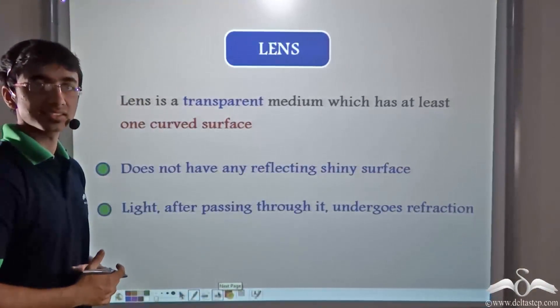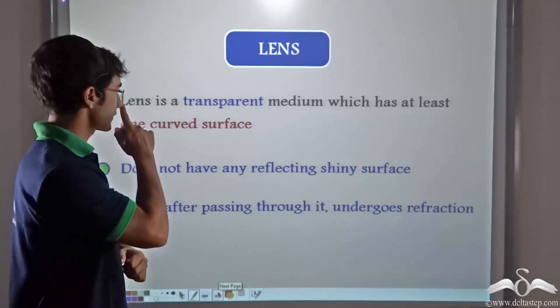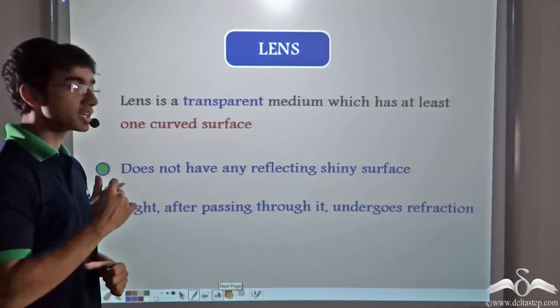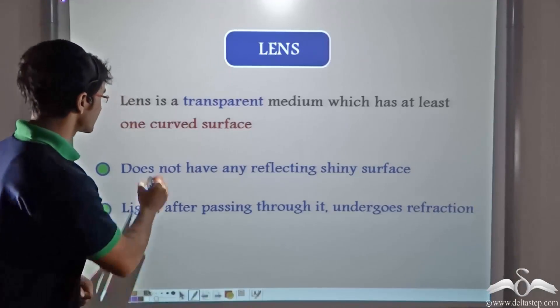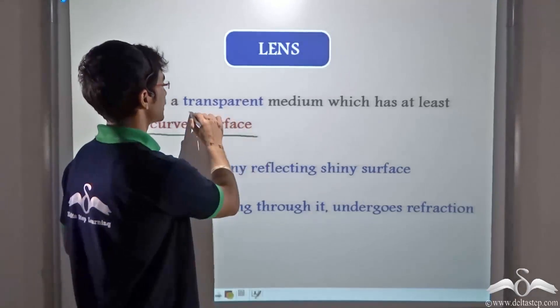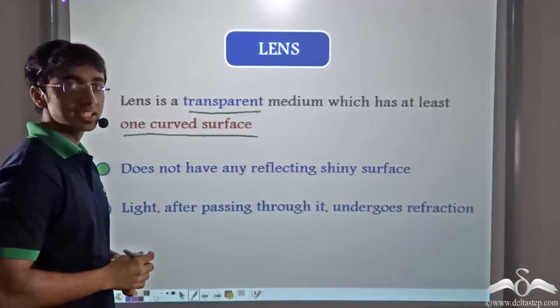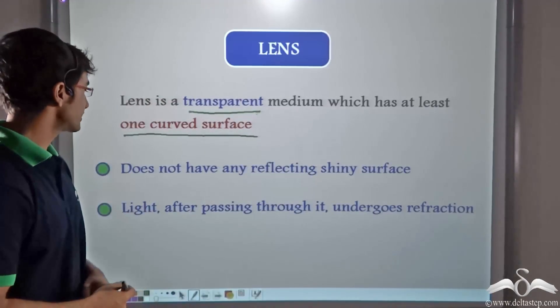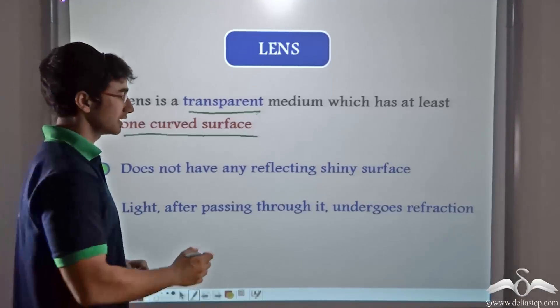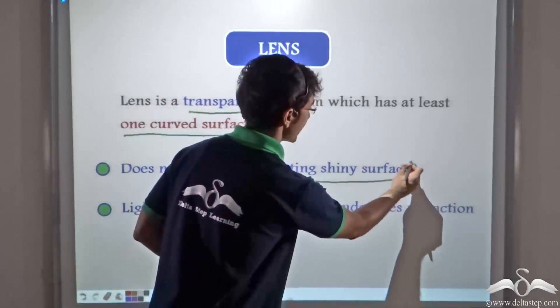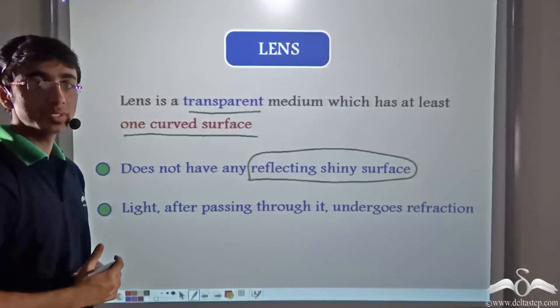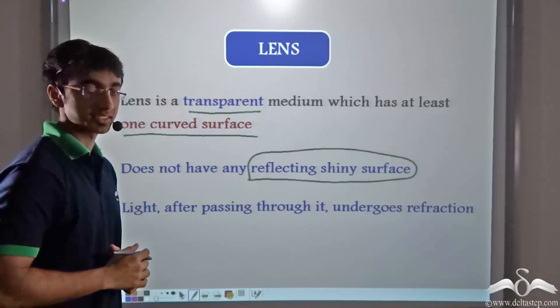So what is a lens? Let us define lens. Lens is a transparent medium which has at least one curved surface. Notice that it should be transparent and it should have at least one curved surface. Also notice that a lens should not have any reflecting or shiny surface, because in that case, reflection will take place and it will defeat the purpose of a lens.